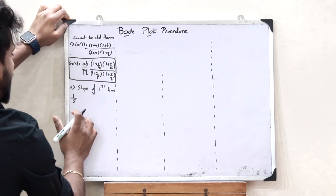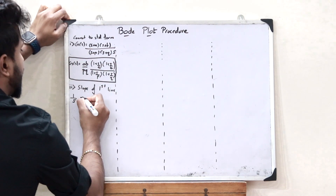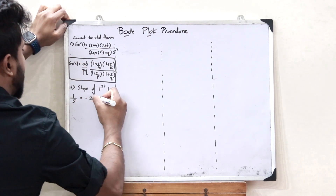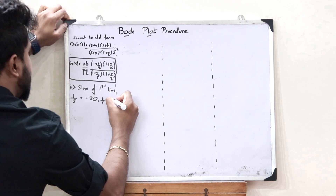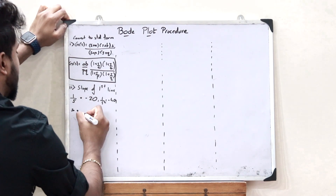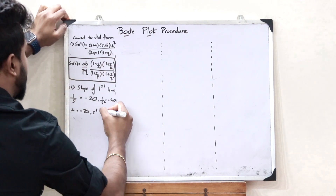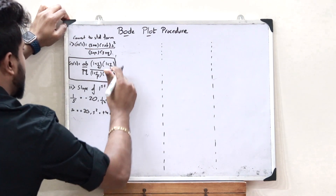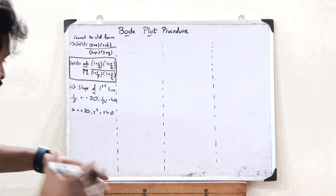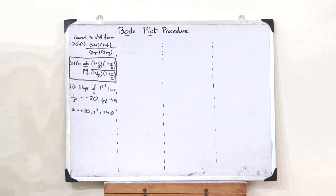If we had a particular S term in the denominator, then the slope would be −20. Or if there was an S² in the denominator, that would be −40. But if there was an S in the numerator, then this would be +20. And if there was an S² in the numerator, this would be +40. This is the slope of the first line of the Bode plot, and it solely depends on whether there is an S term in the numerator or the denominator.